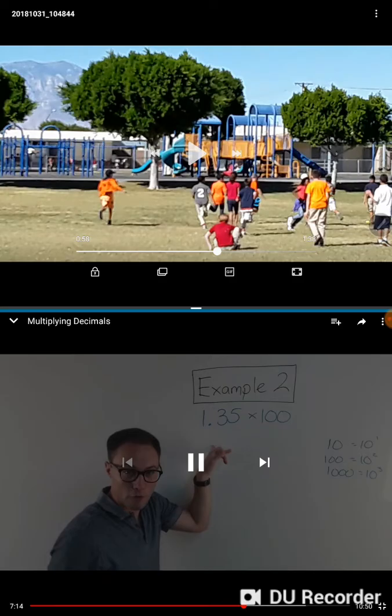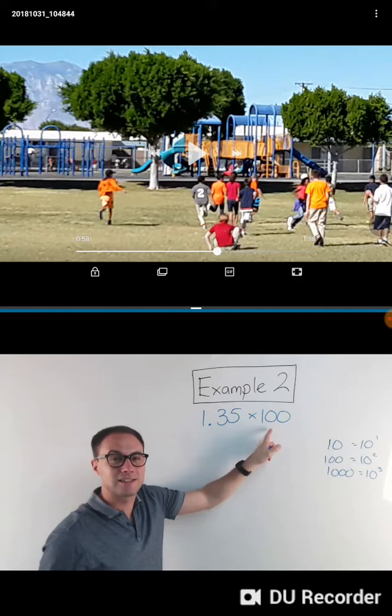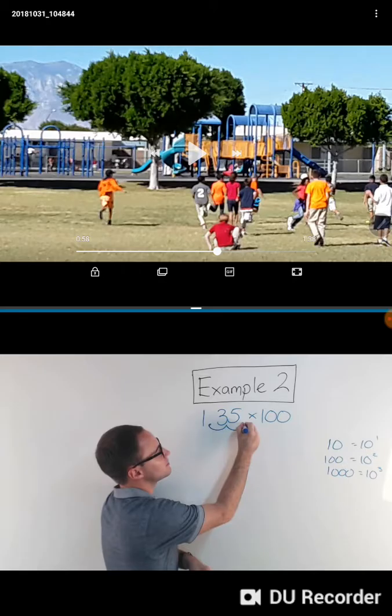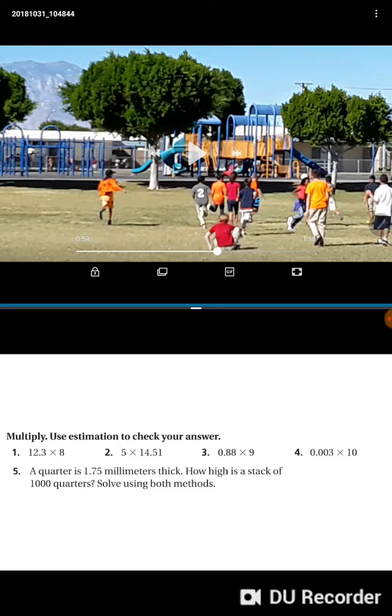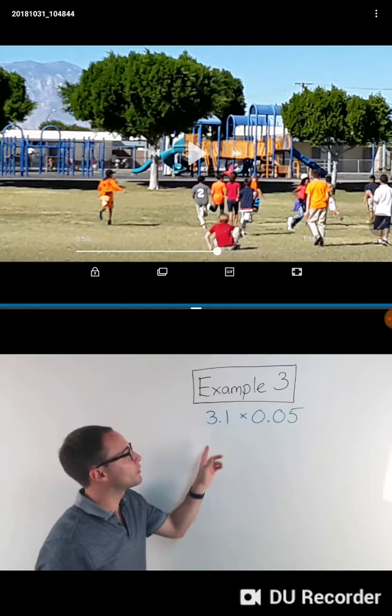To the right, because I'm multiplying, and there's two zeros, or I can think of that as 10 squared, to the power of 2. So I'm gonna move it once, twice. So that becomes 135. Very simple. Here's something to try on your own. Alright, here's our last example.